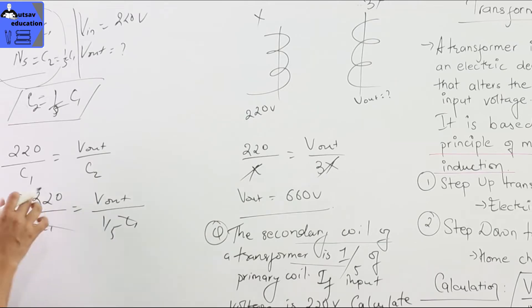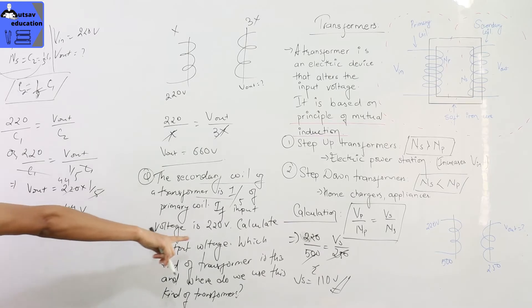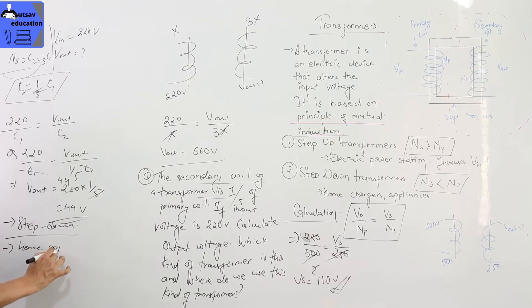The secondary coil of a transformer is one by five of a primary coil. Primary coil NP equals to C1. Secondary coil NS is C2. Voltage input is 250. Voltage out is. Number of the secondary coil NS is one-fifth of C1. One by five C1. NS by NP equals to Vout by Vin. NS divided by C1 equals to Vout by 250. Vout is one-by-five divided by five. 250 divided by five. Fifty volts. Output is 50 volts.